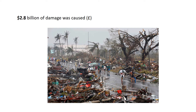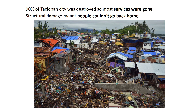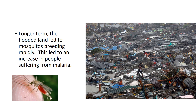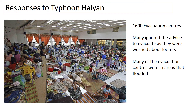Half a million families were made homeless and the cost of damage was 2.8 billion. You can see the devastation in the pictures, with many people fleeing their homes with nowhere to go. In fact, 90% of the city of Tacloban was destroyed — no hospitals, no schools, no services. Longer term, the flooded land not draining quickly led to mosquitoes breeding rapidly, causing an increase in people suffering from malaria.